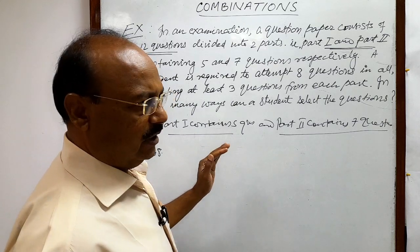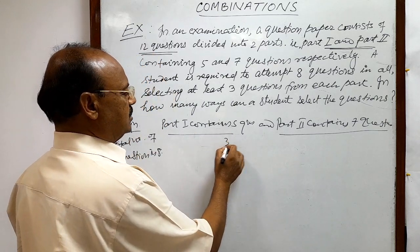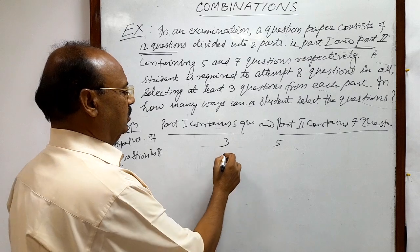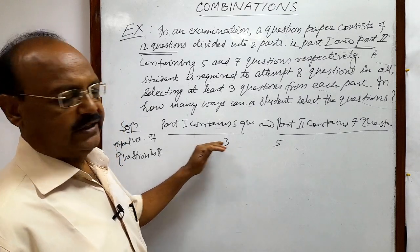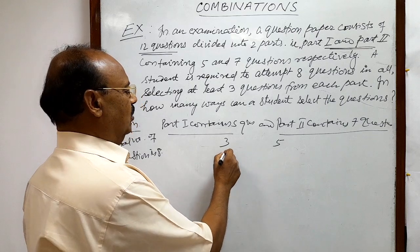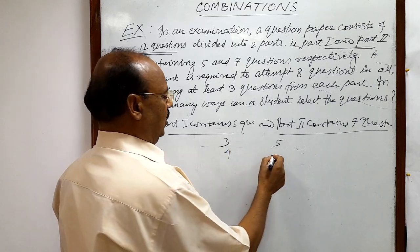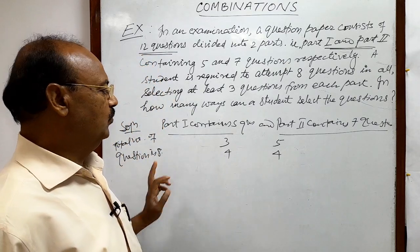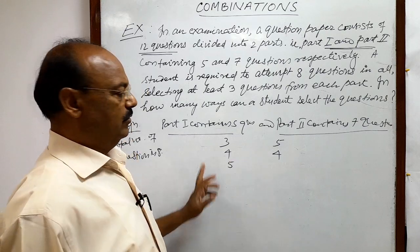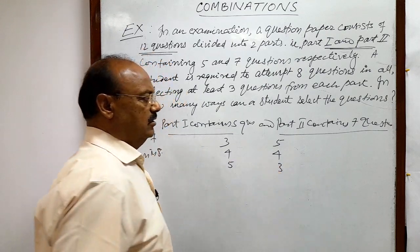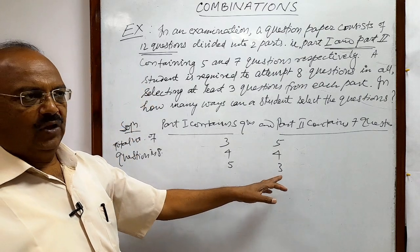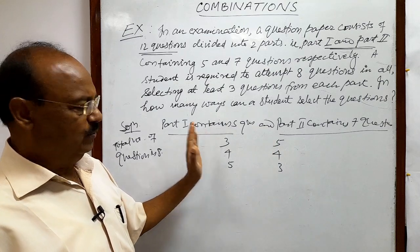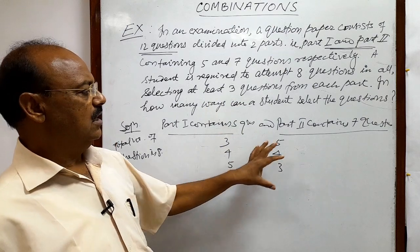A student can select 3 questions from Part 1 and 5 questions from Part 2, since a minimum of 3 questions have to be selected from each part. Another option is 4 questions from Part 1 and 4 questions from Part 2, so the total is 8. And the third option is 5 questions from Part 1 and 3 questions from Part 2 — total 8. So these are the 3 options, keeping in mind that a minimum of 3 questions must be selected from each part.